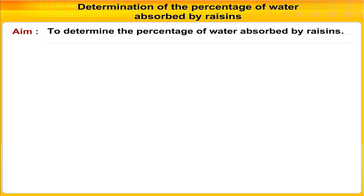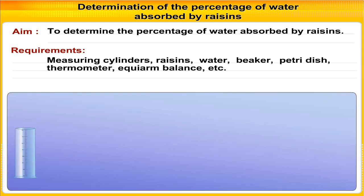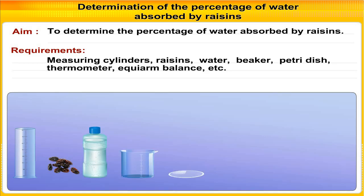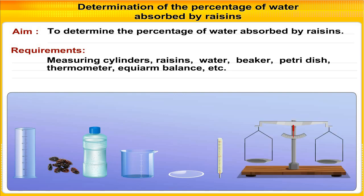Requirements: measuring cylinders, raisins, water, beaker, petri dish, thermometer, equilibrium balance, etc.